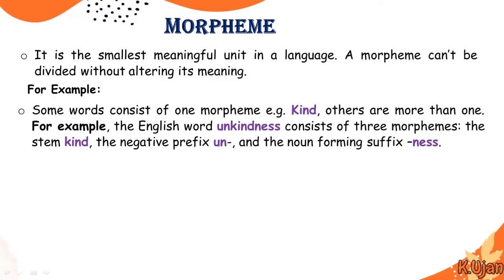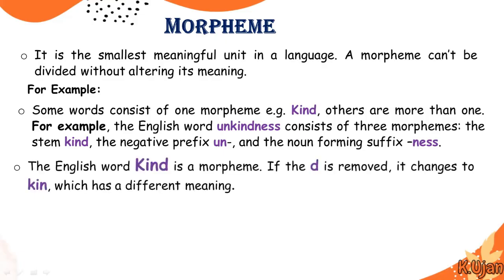We could say a morpheme is the smallest meaningful unit, which may have a meaning or it may have a grammatical function. Here is another example: the English word 'kind' is a morpheme. If the 'd' is removed, it changes to 'kin', which has a different meaning. These are two different words and two different morphemes.